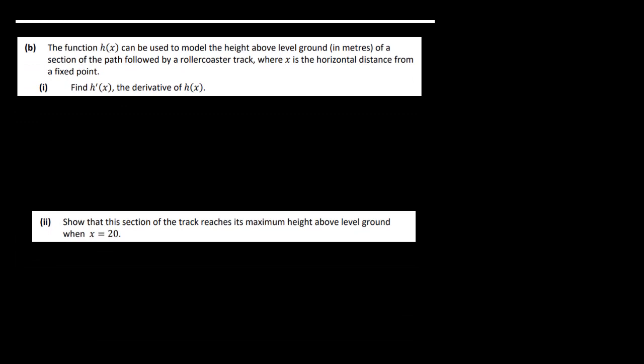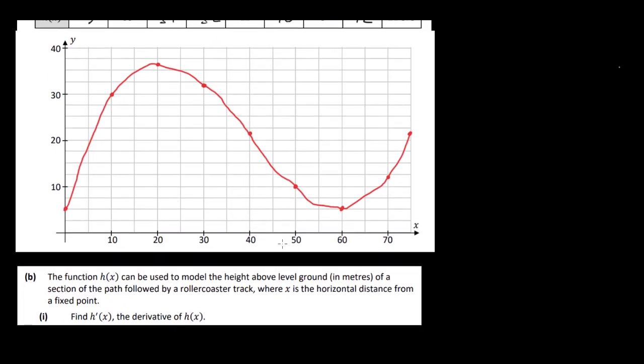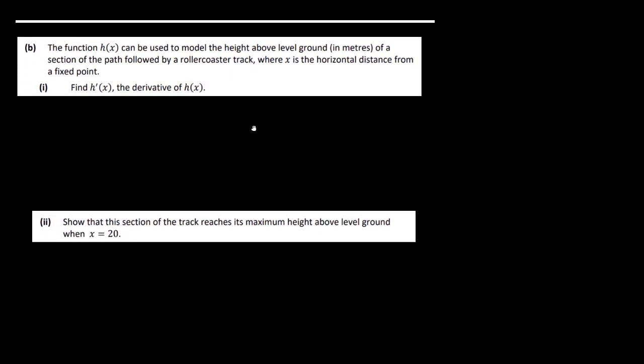The function h(x) can be used to model the height above level ground in meters of a section of the path followed by a roller coaster track where x is the horizontal distance from a fixed point. So you can imagine that this is the side view of a roller coaster, and you're standing here on the ground on the x-axis, so the roller coaster goes up and down and up. It's just one section of the roller coaster. So the first thing they ask us to do here is find h'(x), the derivative of h(x).